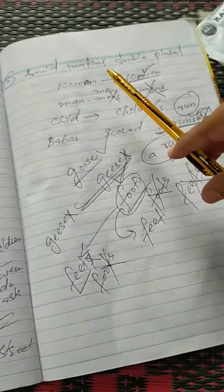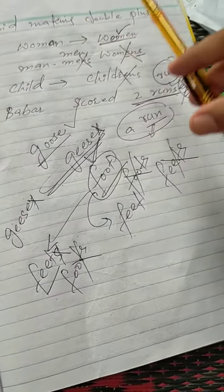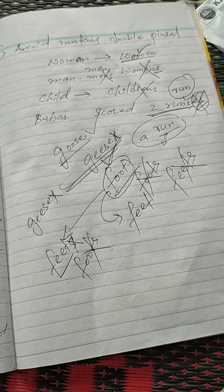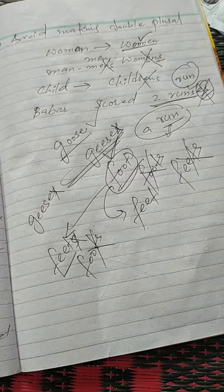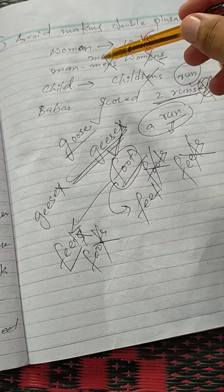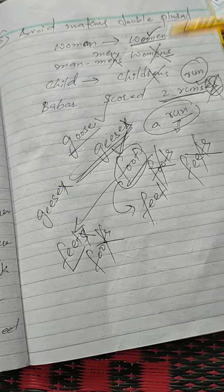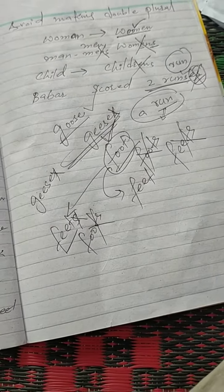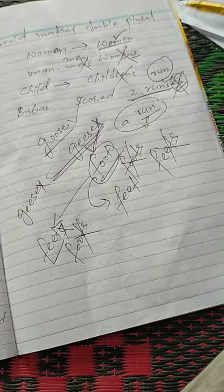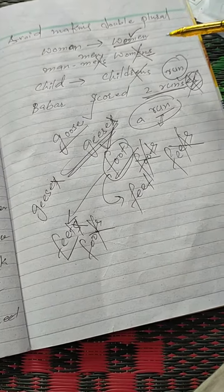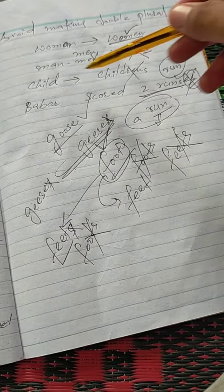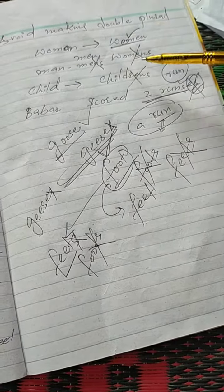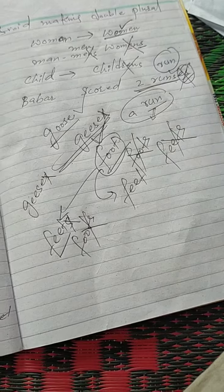We have already covered double plurals — for example, 'women,' 'women's,' 'men,' 'men's,' 'child,' 'children,' 'children's.'